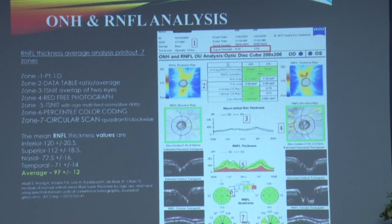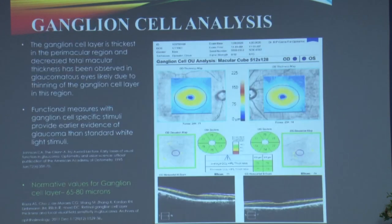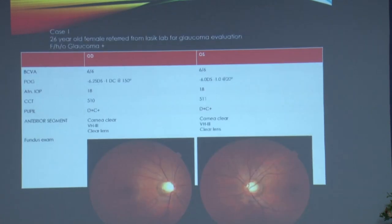Zone 6 is percentile by clockwise sector and Zone 7 is a more sensitive clockwise sectoral analysis. The ganglion cell printout is similar — average RNFL thickness maps at top, sectoral maps, and average ganglion cell layer thickness in between.